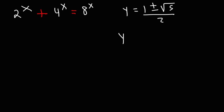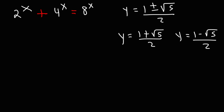We now have two possible answers for the value of y. y can equal 1 plus the square root of 5 divided by 2, or it can equal 1 minus the square root of 5 divided by 2. The first answer is approximately 1.618034 — basically the golden ratio of the Fibonacci sequence. The other is approximately negative 0.618034. So those are the two possible values of y.